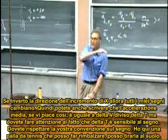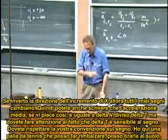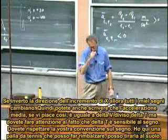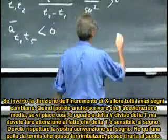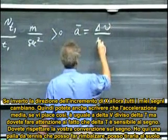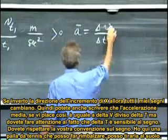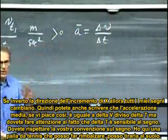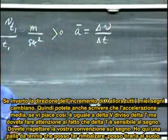If I reverse the direction of increasing X, then all my signs will change. So you can also write down, then, that average acceleration, if you like that, is delta V divided by delta T, but you must be careful because the delta V is sign-sensitive. You must obey your sign convention.